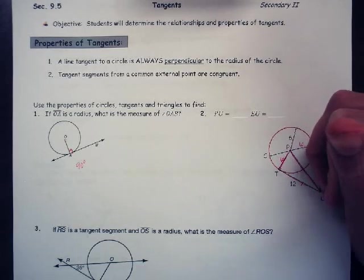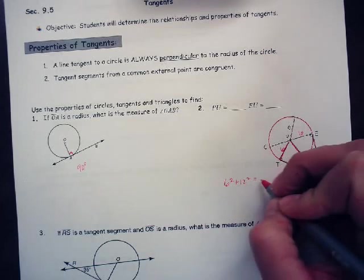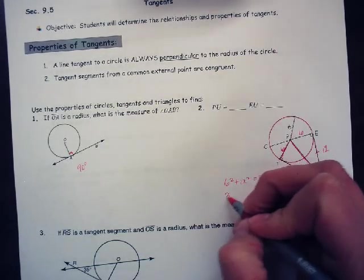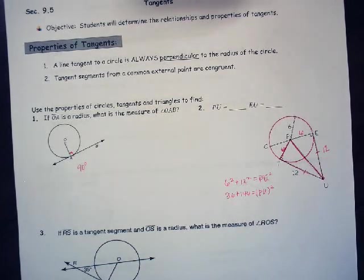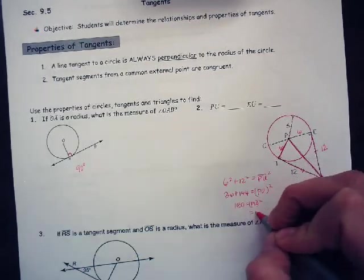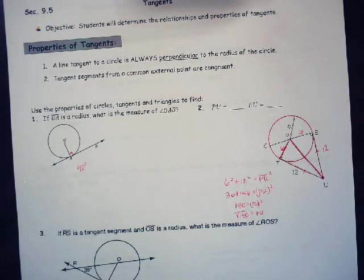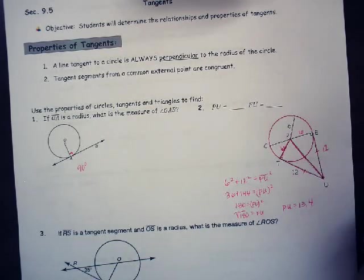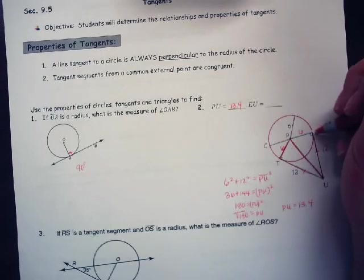And if we look right here, I'll try to color it in a little bit darker. But we have a right triangle with 12 and 6 as a side and PU as a side we don't know. So we can say 6 squared plus 12 squared equals PU squared. 36 plus 144 equals PU squared. So 36 plus 144 is 180 equals PU squared. To find the length of PU, I would just take the square root of 180. The square root of 180, if we're just going to do the decimal answer, it would be 13.4. So the length of PU is 13.4, and EU is 12.